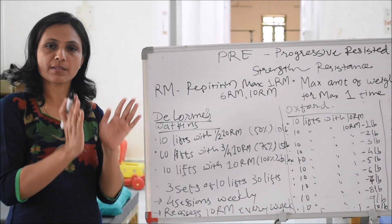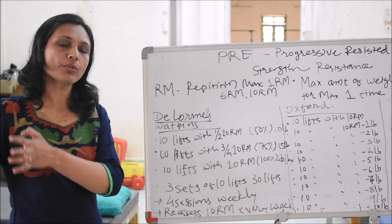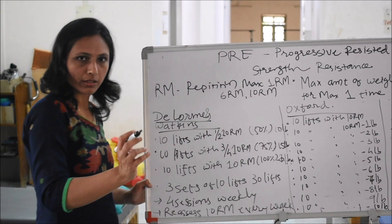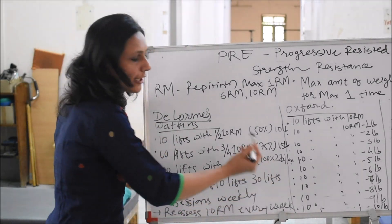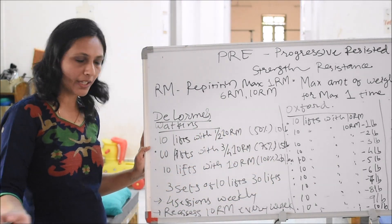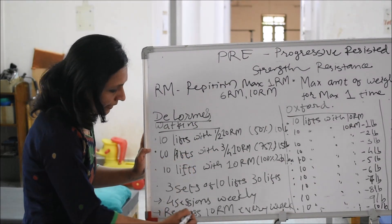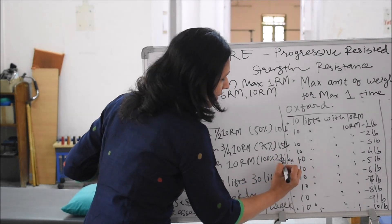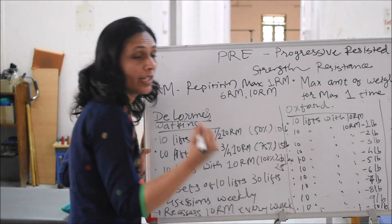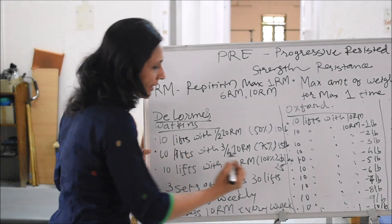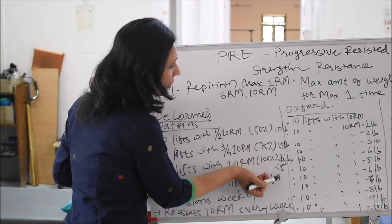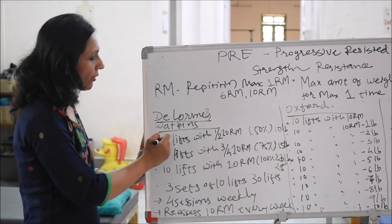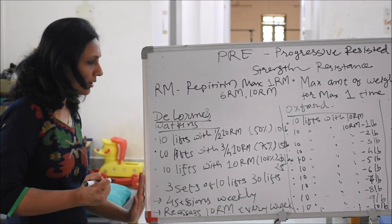This complete session is performed today, and likewise 4 sessions are performed in a week. In the next week you reassess the 10RM, and there is a probability it will increase from 20 to 25 pounds. At that point you take the new 10RM of 25 pounds and adjust accordingly — 50% becomes 12.5 pounds — and continue from there. This is the DeLorme and Watkins technique.